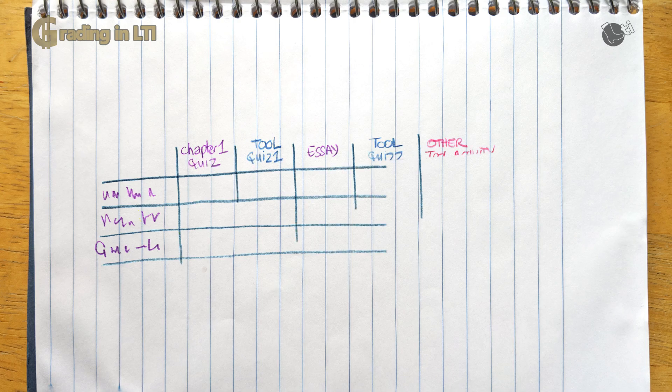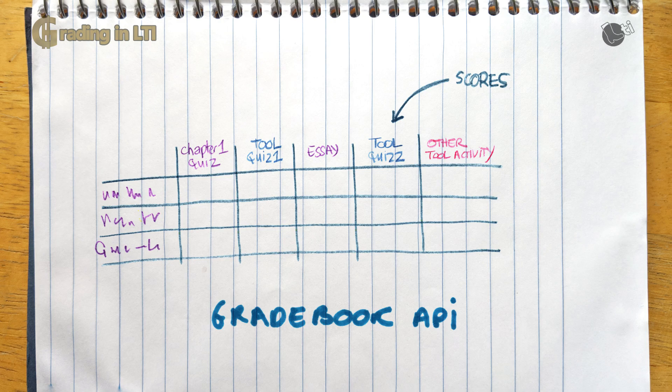The assignment and grade service main job is to allow a tool to post grades to the platform gradebook. It is important to understand it is not meant to be a full gradebook API. That is, you cannot build an alternate gradebook with that API. It focuses solely on the way to send grades from the tool to the platform.